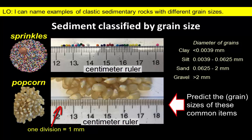Use the measurements on the ruler to figure out if the sprinkles and popcorn represent clay, silt, sand, or gravel-sized particles.